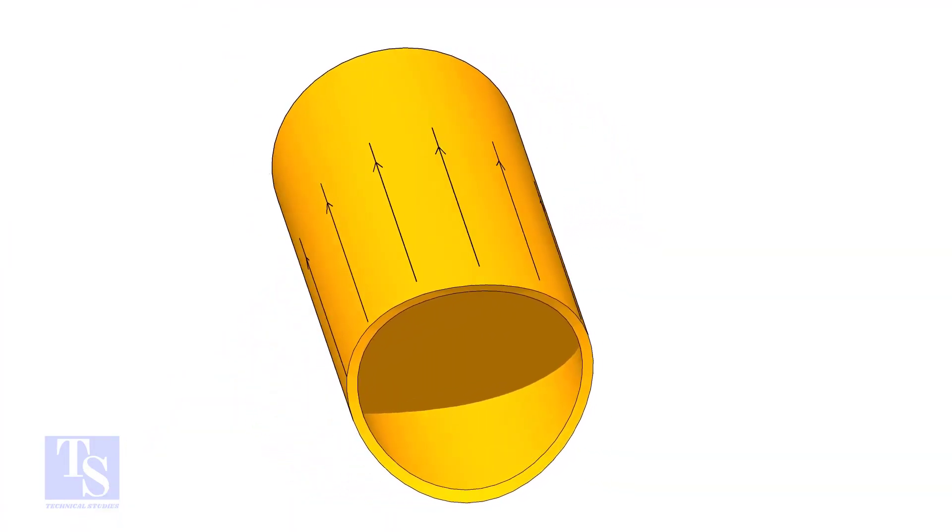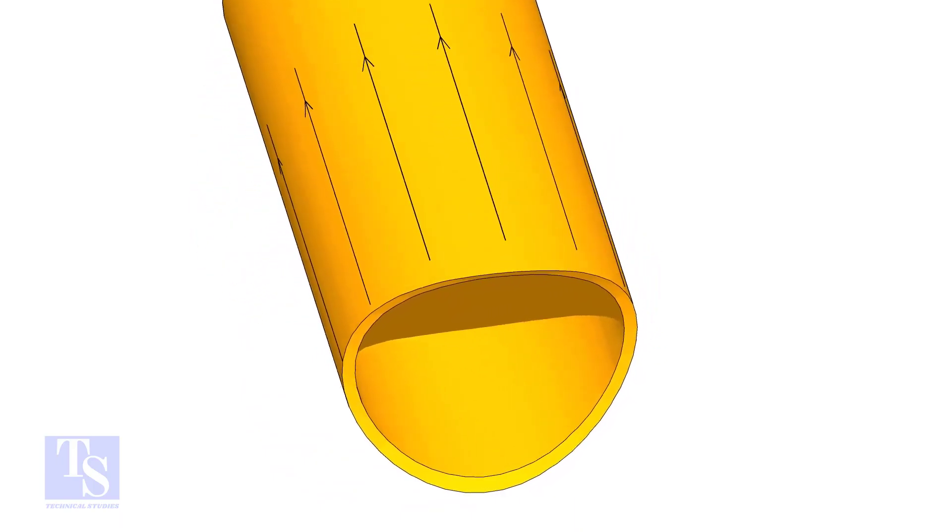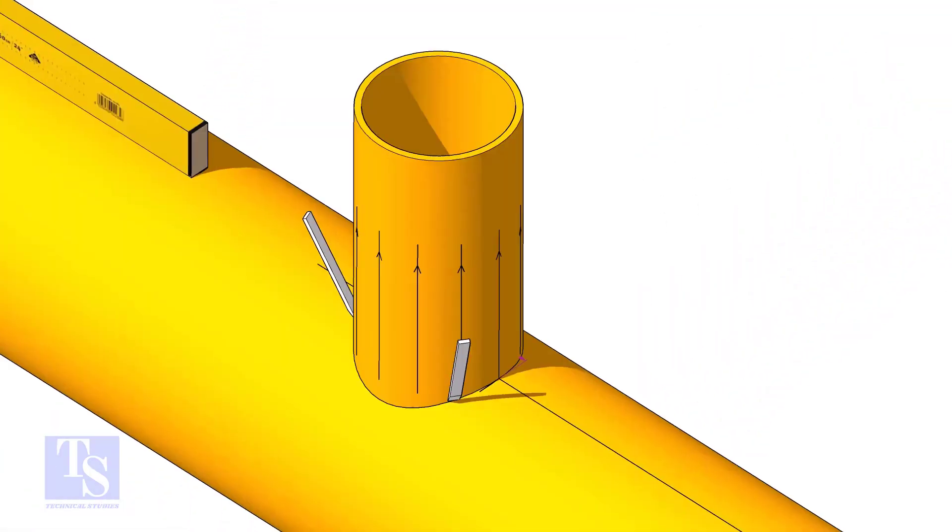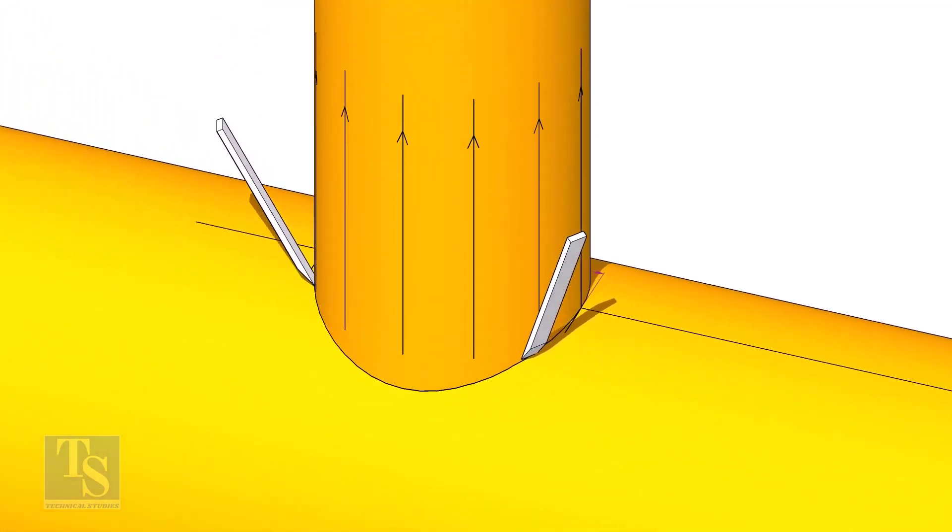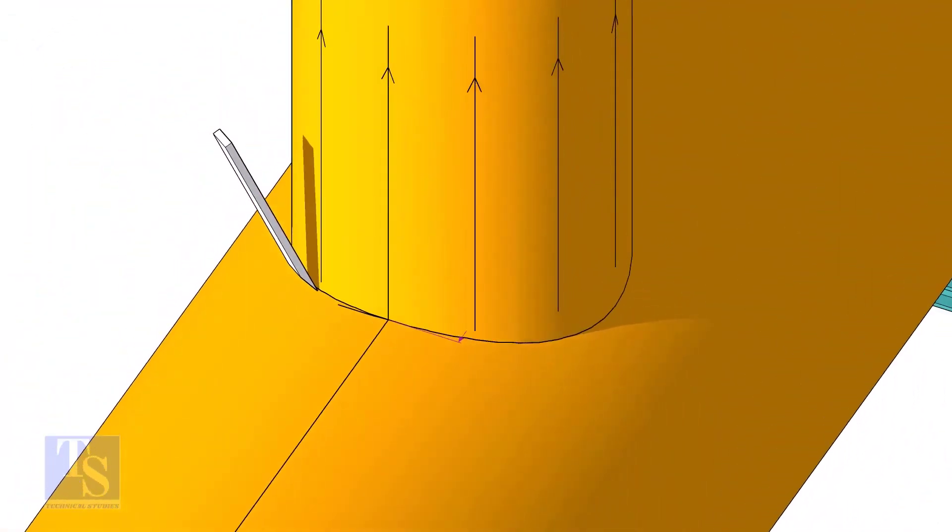After cutting and grinding the notch on the branch pipe, put it on the header. Make sure it is exactly in its position and mark the opening on the header as shown.